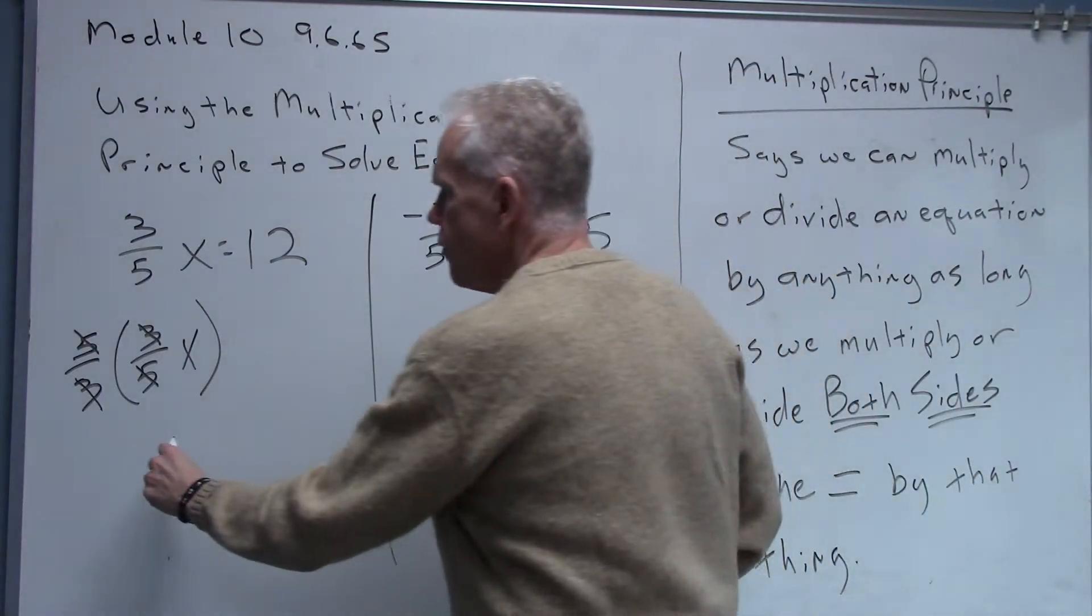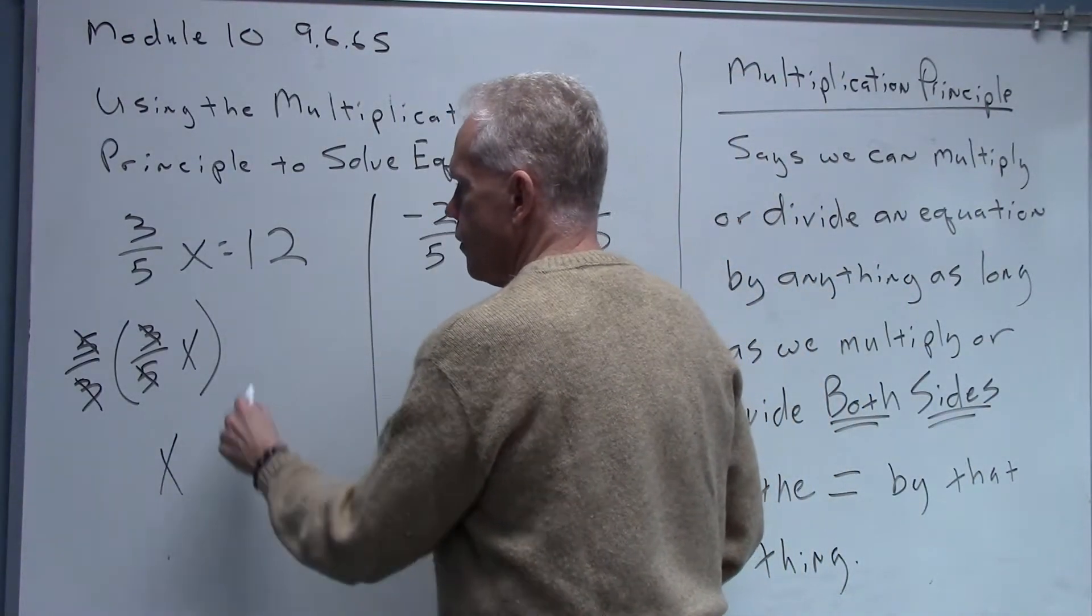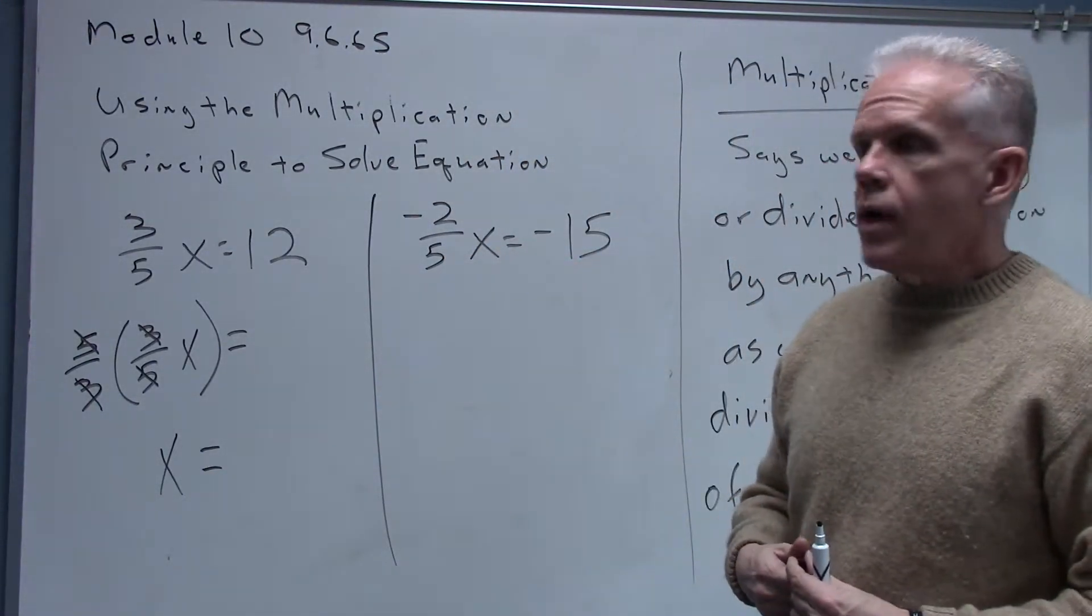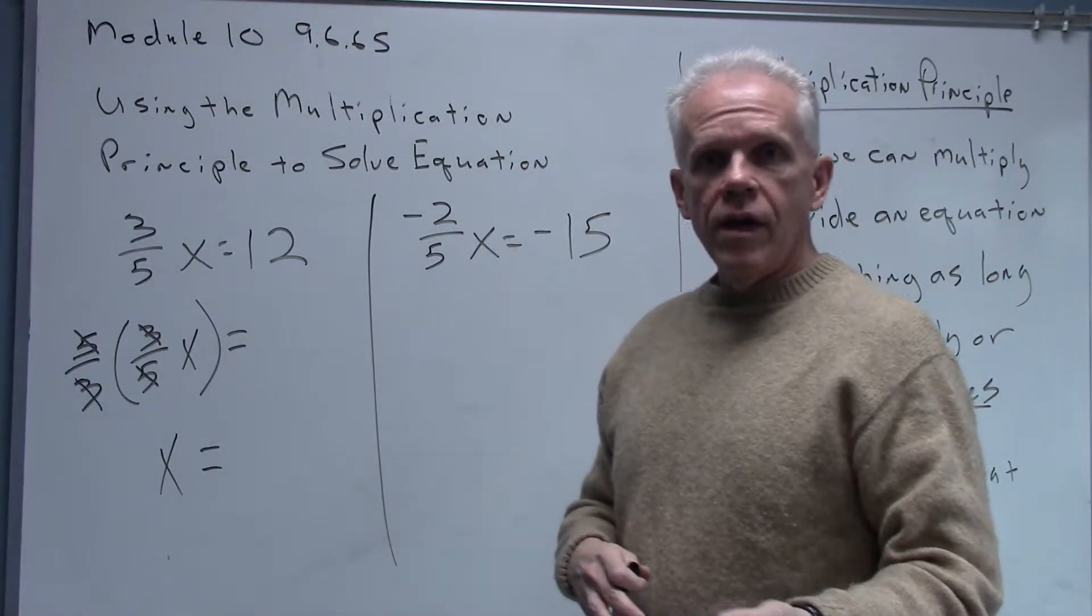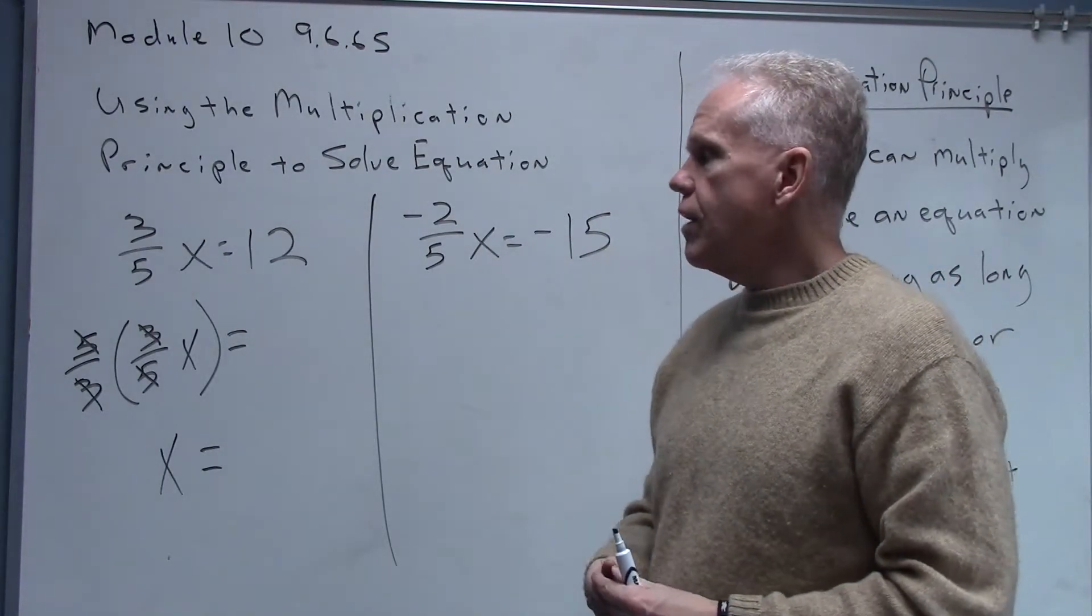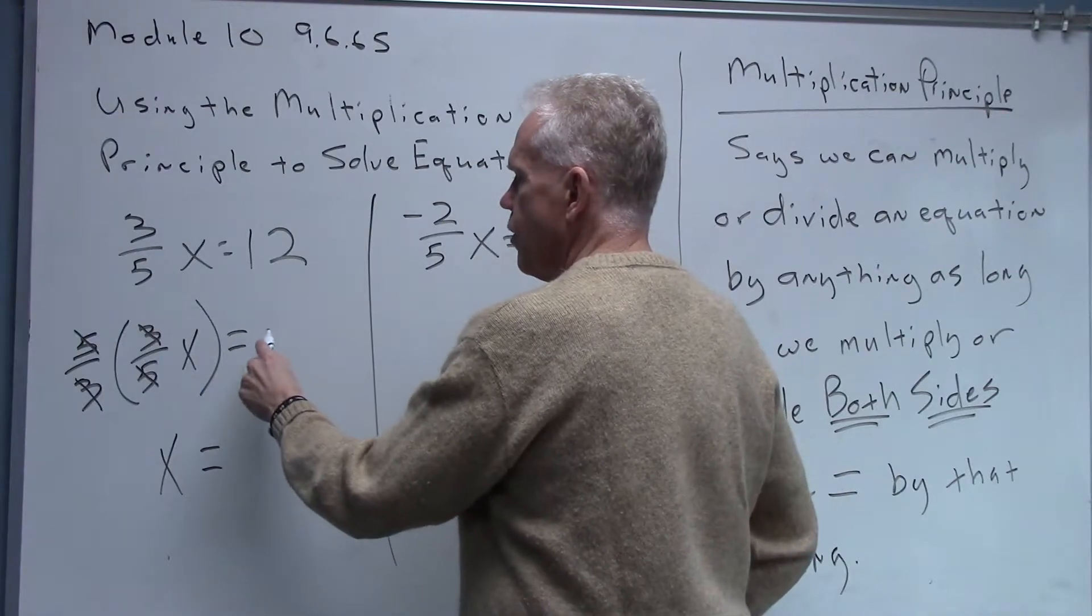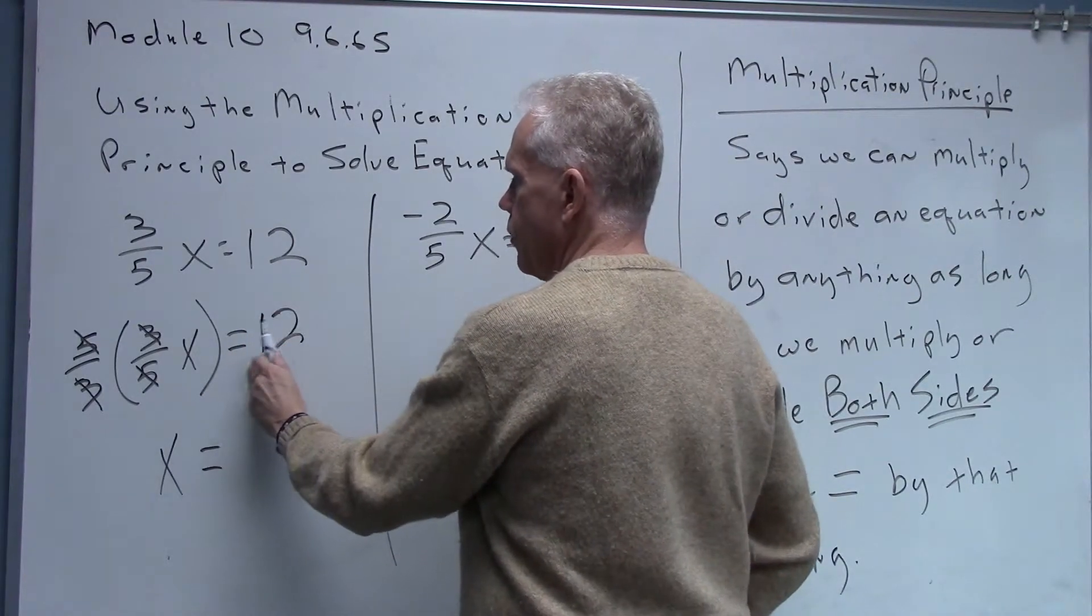Now I can't forget the right side of the equation because remember, whatever I did on the left side I must do the same thing on the right side. Okay, so I'm going to come over here on this side of the equation. I'm going to take my twelve, okay, and I'm going to multiply that times five-thirds also.